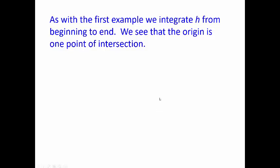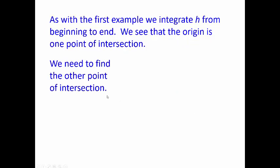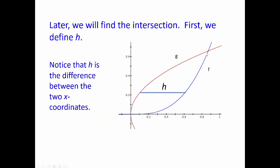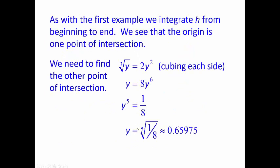In the first example we integrated from beginning to end. We see that the origin is one point of intersection, so here the y-value is zero. But how do we find the y-value at the upper intersection? We need to find the other point. To find where the two graphs intersect — where they're equal — you just set them equal to each other. To get rid of the cube root, you cube both sides, and you get y equals 8 times y to the sixth.